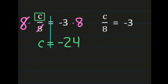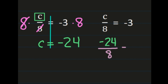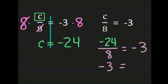We can check: substitute negative 24 for c. We get negative 24 over 8 equals negative 3. A negative divided by a positive is a negative, and 24 divided by 8 is 3. So we get negative 3 equals negative 3, confirming that c equals negative 24 is correct.